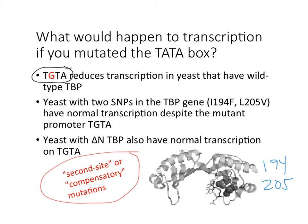By making two mutations to those two amino acids — changing an isoleucine to a phenylalanine at position 194, and a leucine to a valine at position 205 — you've made a TBP that doesn't like TATA, it likes TGTA. So we can have compensatory mutations in the protein that help it recognize new DNA sequences.